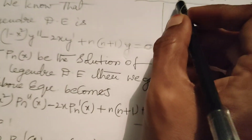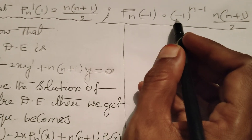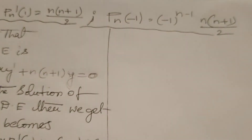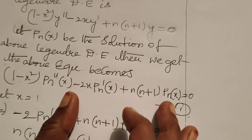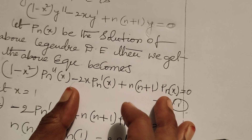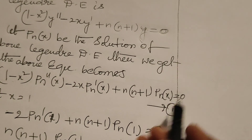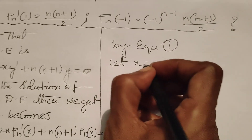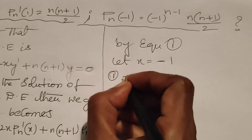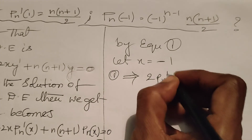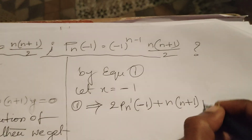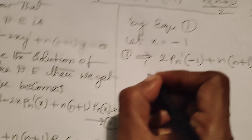Next, we solve for P'n(-1) = (-1)^(n-1) · n(n+1)/2. Using the same Legendre differential equation with Pn(x) as the solution given by equation 1, we substitute x = -1. Then equation 1 gives: 2·P'n(-1) + n(n+1)·Pn(-1) = 0.